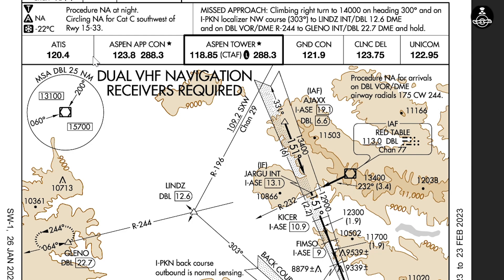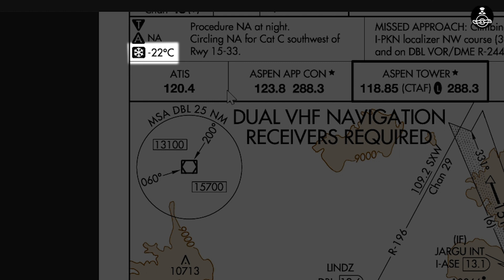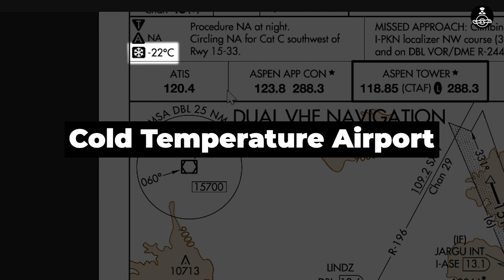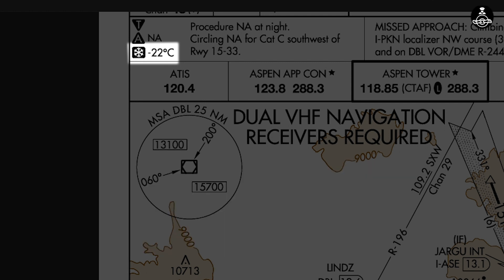The next one is another interesting symbol, which you can find on the same approach plate — it's a little snowflake with a temperature next to it, such as negative 22 degrees Celsius. Whenever you find such a symbol it means it's a cold temperature alert. It indicates that a cold temperature altitude correction is required at that airport when the reported temperature is at or below the published temperature.